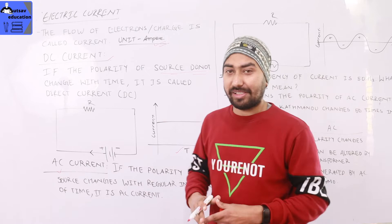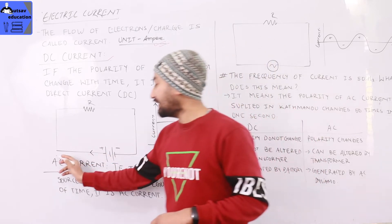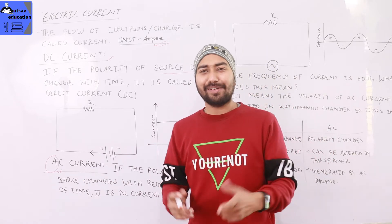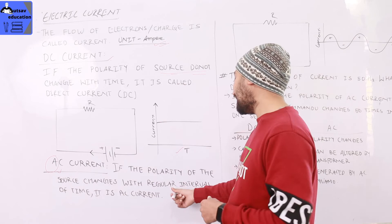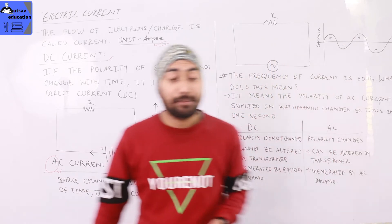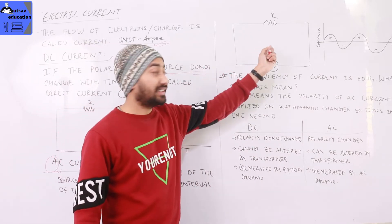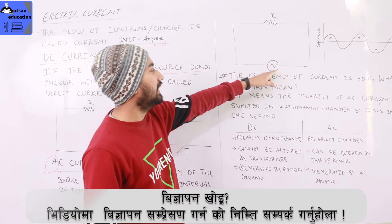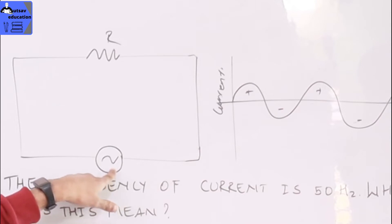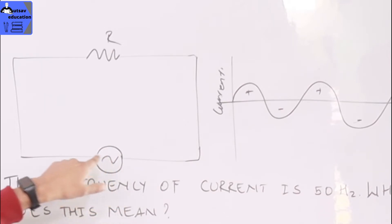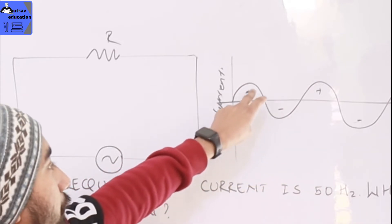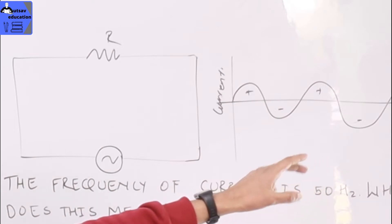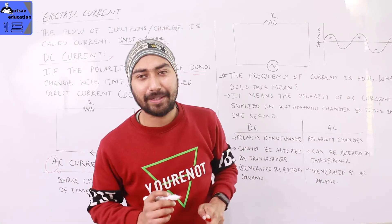Now looking at the AC current, which is alternating current. Alternating current means the polarity alternates. If the polarity of the source changes with a regular interval of time, it is called AC current. The output of an AC current circuit alternates — the graph shows positive, then negative, then positive and negative again, alternating continuously.